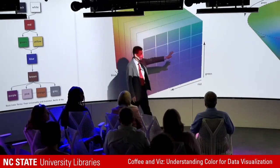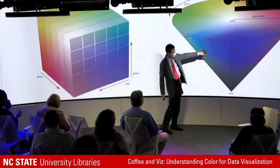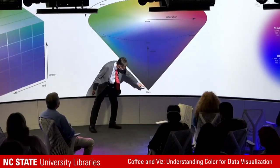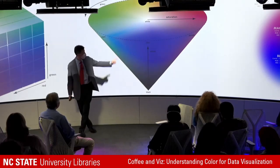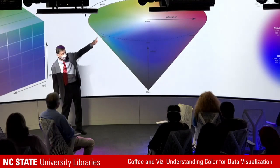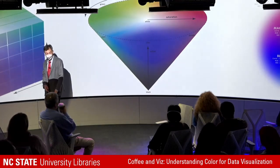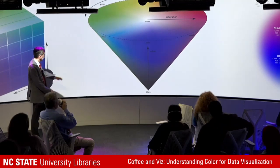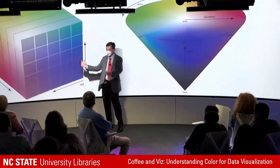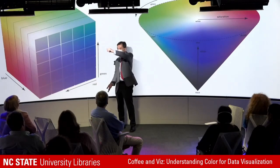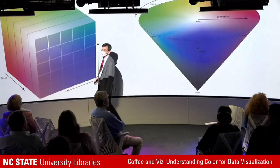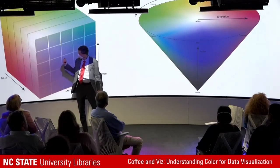Another model is HSV — Hue, Saturation, Value — sometimes called HLS. Very much like Munsell: luminance goes up the center pole, dark at the bottom and white at the top; saturation radiates out from the center; hue goes around the outside. The interesting thing is that if you take the RGB cube and tip it up on its black edge — black at the bottom, white at the top — and push down, you get this shape. It's essentially a linear combination of the RGB cube.